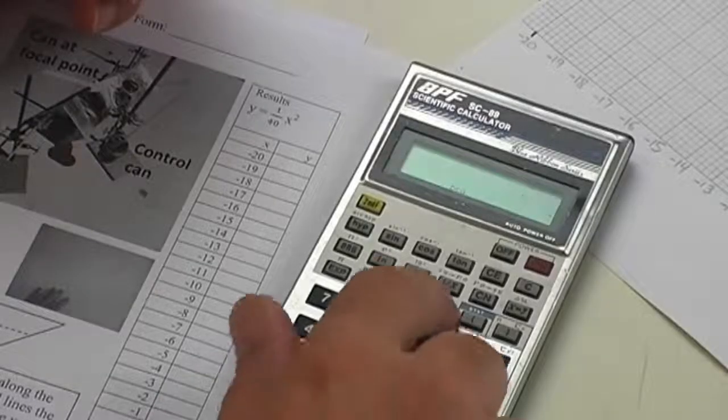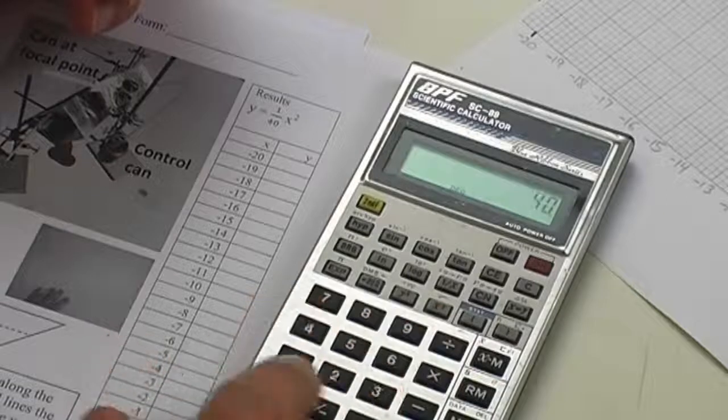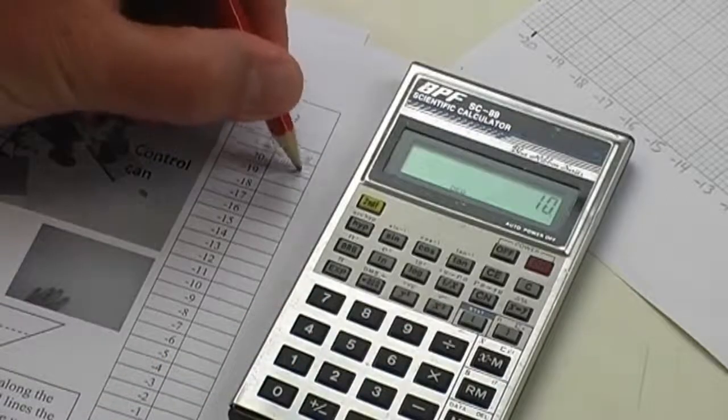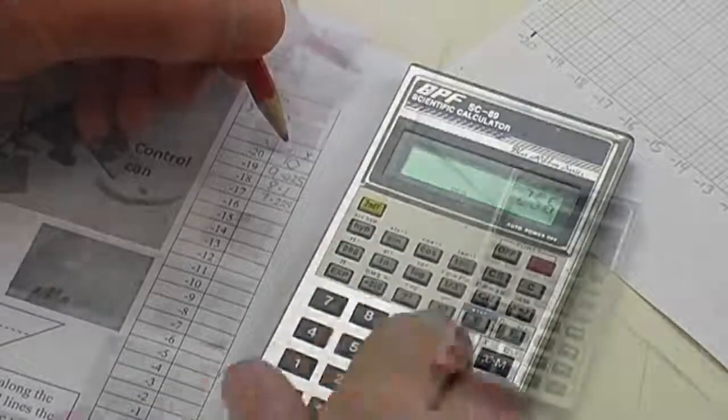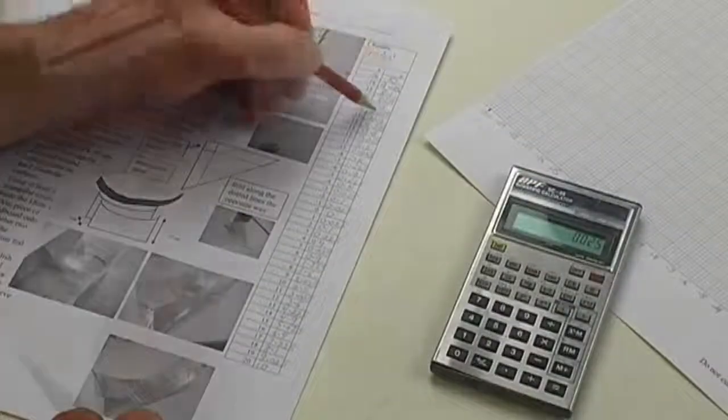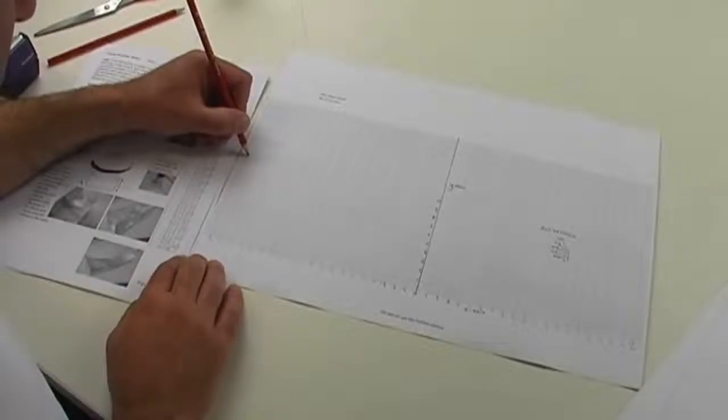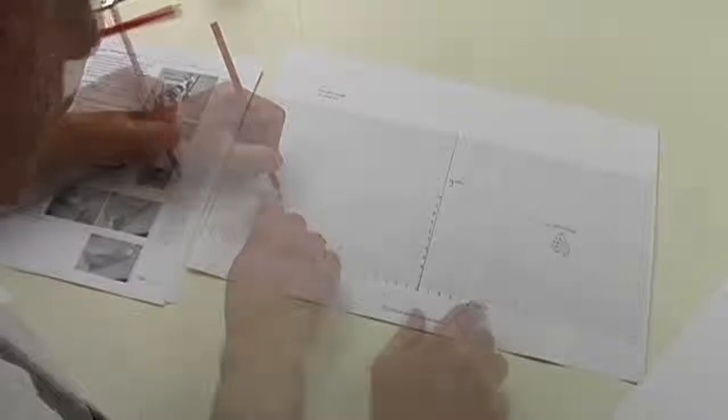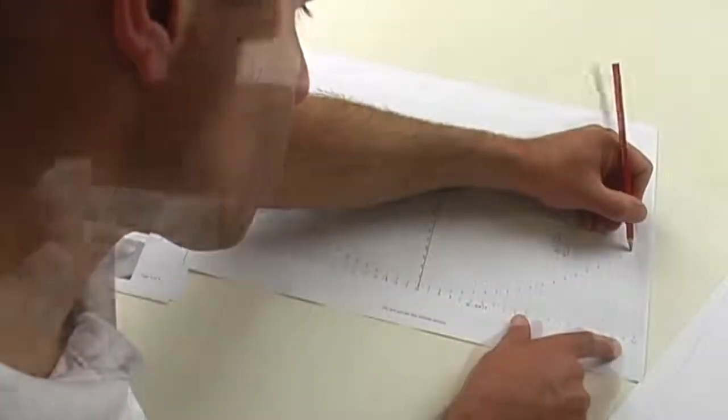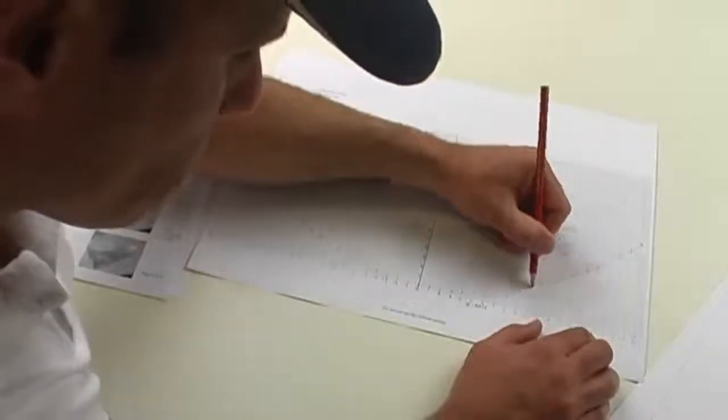Firstly, calculate all the y values of the equation for when the x values are between negative 20 and positive 20. This will take a few minutes. Then plot the points onto an A3 sheet of graph paper. Then plot the dots to produce a smooth curve and you'll have a parabola.